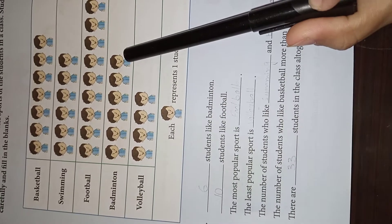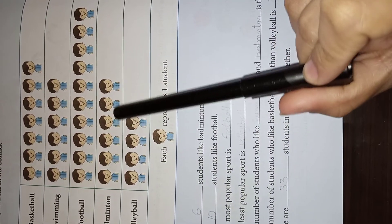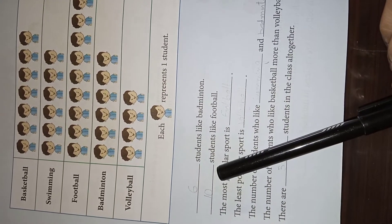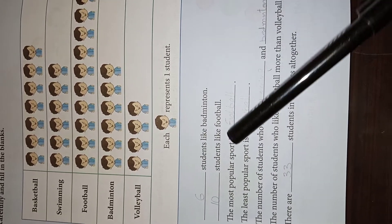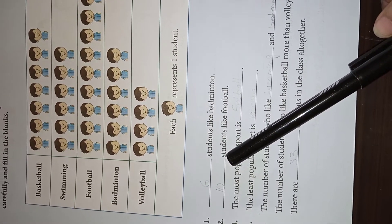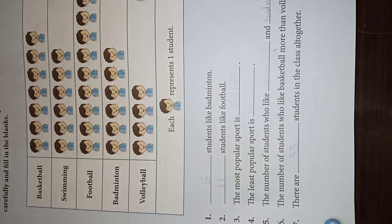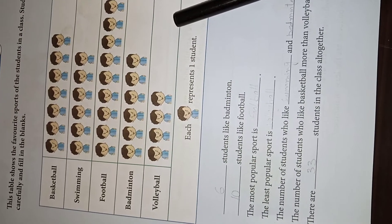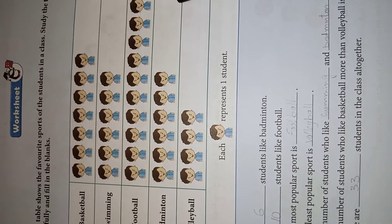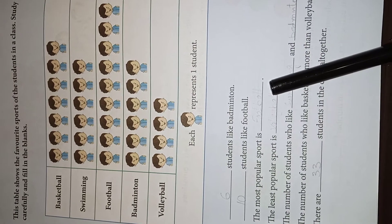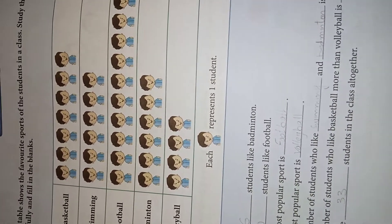There are questions to answer from this table. How many students like badminton? Count from the chart: one, two, three, four, five, six. How many students like football? Count and check against the picture. The most popular sport — this is data organization and data handling — from the chart we can easily identify the greatest number. It is football, so we write football here.